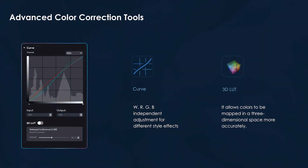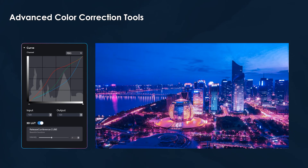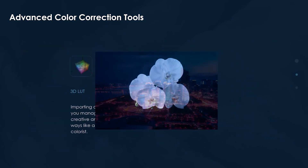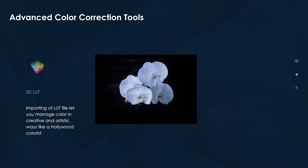Advanced applications can access curve toning and 3D LUT colour mapping in a three-dimensional space. This image demonstrates how the curve can be easily changed to dramatic effect. Colours can be accurately mapped in three dimensions using imported files.